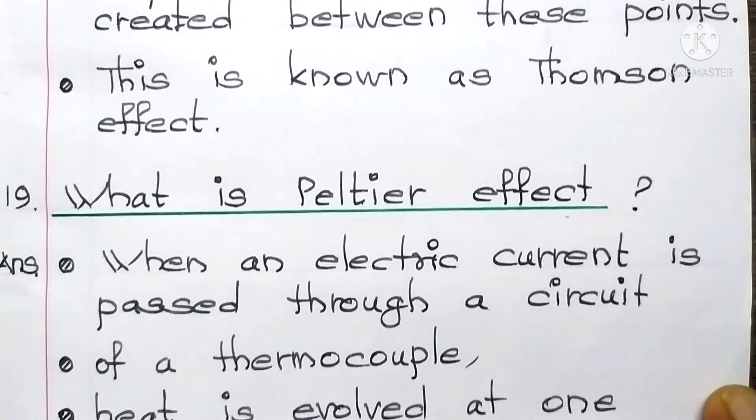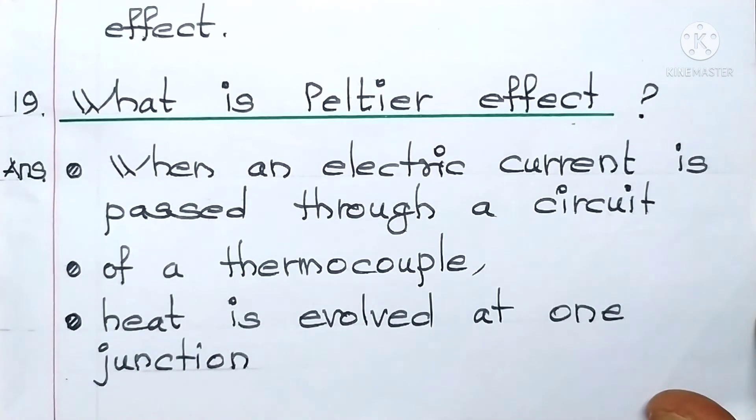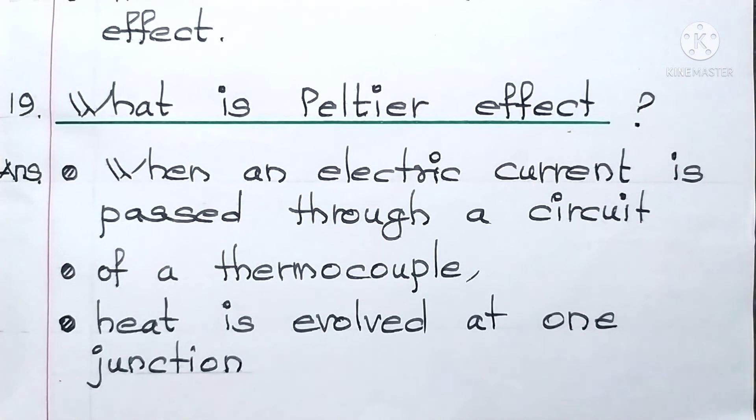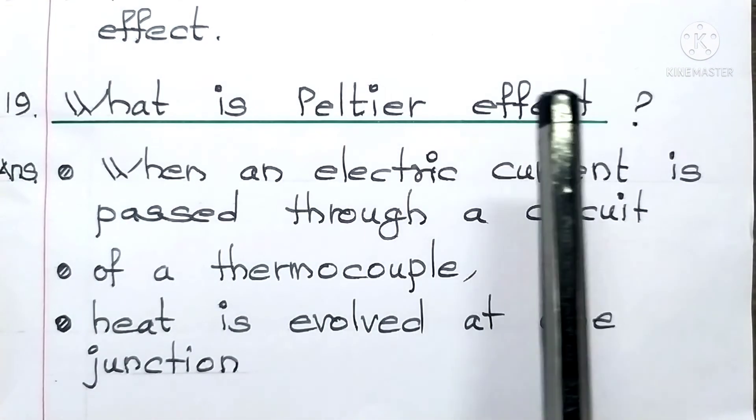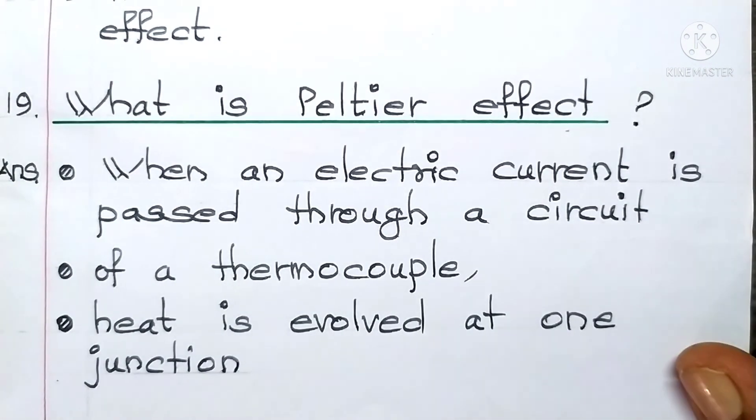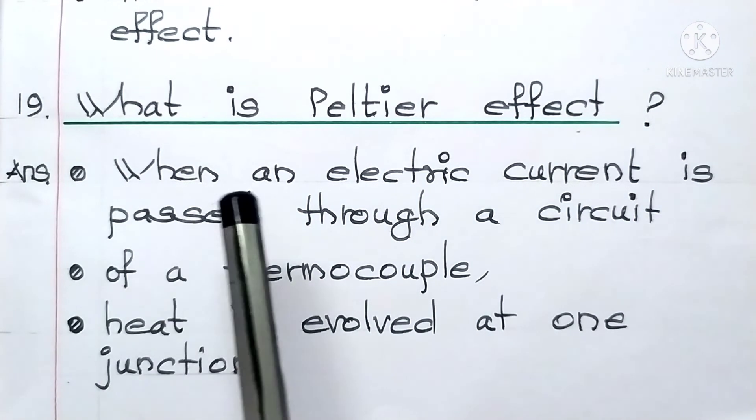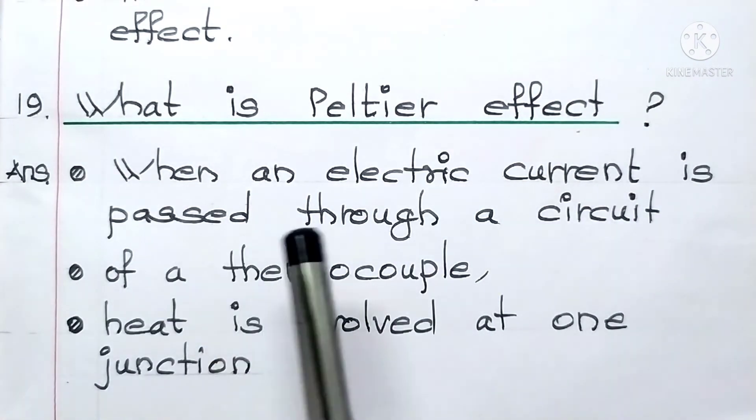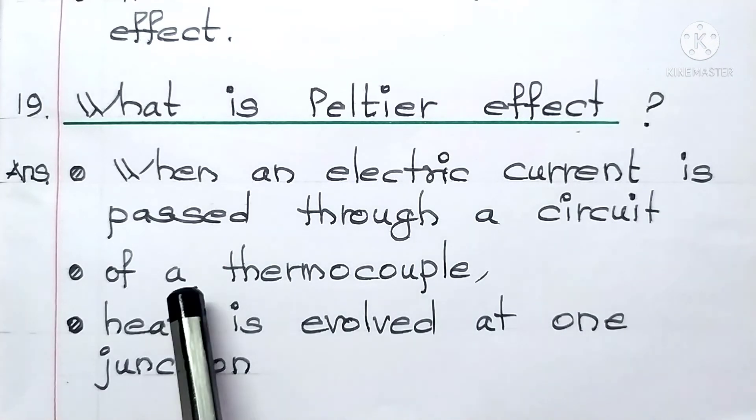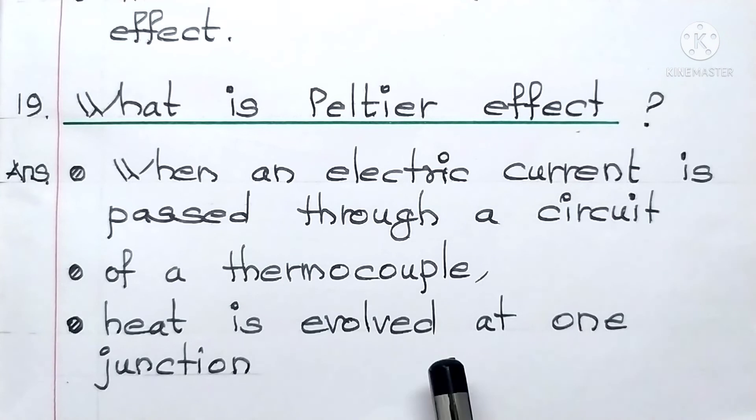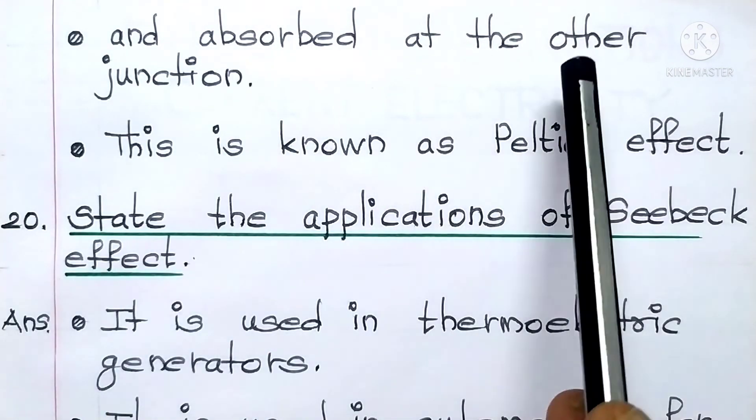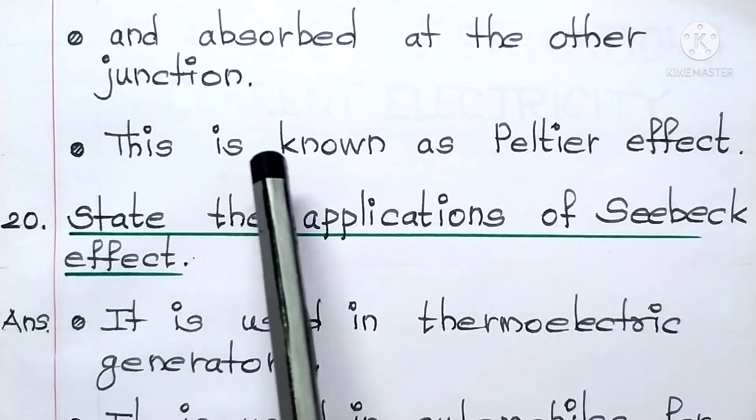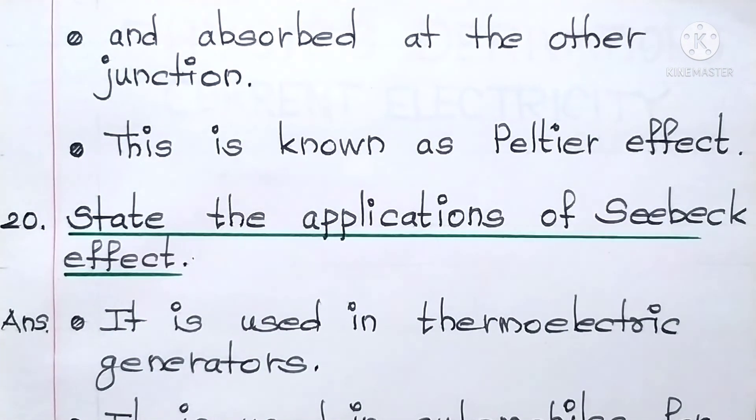Question number 19. What is Peltier Effect? Answer: when an electric current is passed through a circuit of a thermocouple, heat is evolved at one junction and absorbed at the other junction. This is known as Peltier Effect.